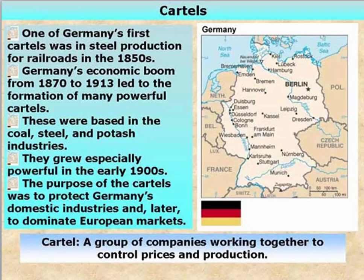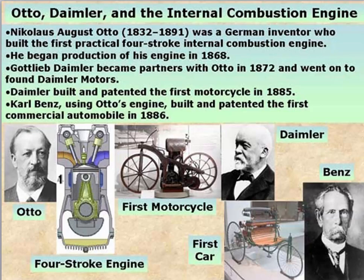During this time period, we start to see the automobile. The internal combustion engine begins to be developed. Nicholas Otto was a German inventor who built the first four-stroke internal combustion engine. Gottlieb Daimler began partnering with Otto in 1872 and founded Daimler Motors — Daimler used to be a part of Chrysler. France took the lead originally in automobile manufacturing, but originally they were just fancy toys for the rich because you could still go faster in a horse-drawn carriage. Eventually they began to take off, and that created a need for petroleum. So during the Second Industrial Revolution, it's steel, chemicals, electricity, automobiles, and a push towards petroleum and new sources of energy.